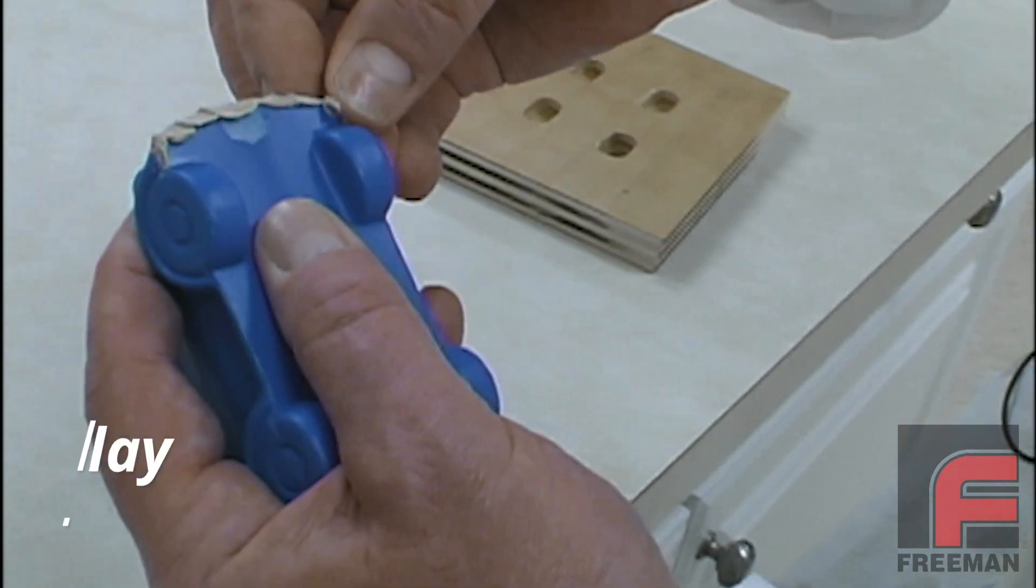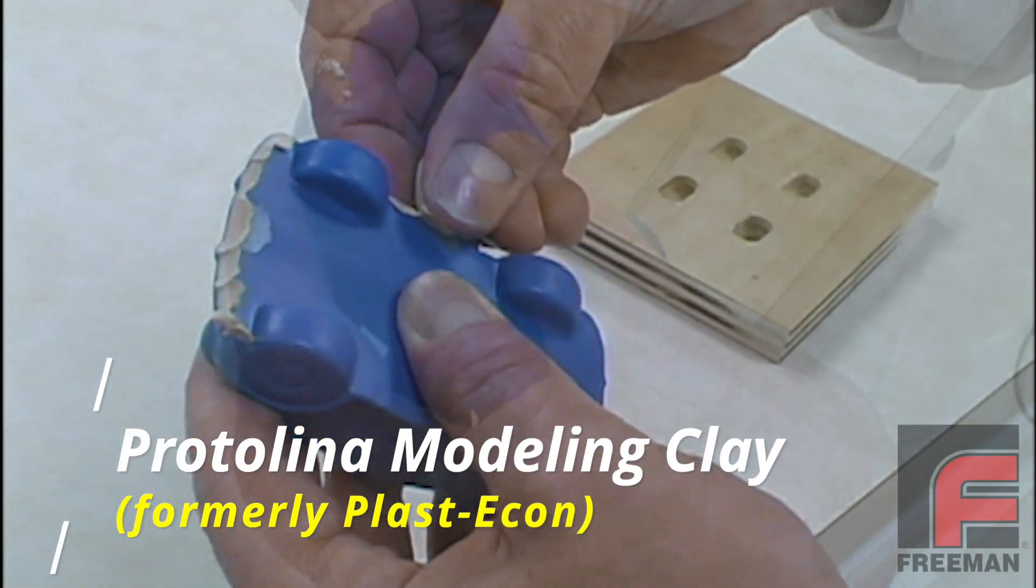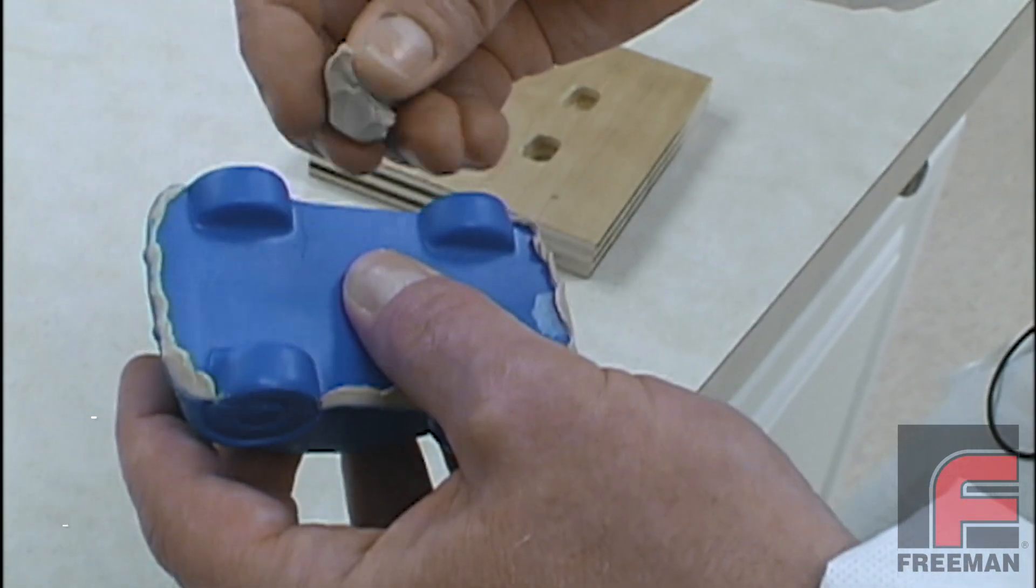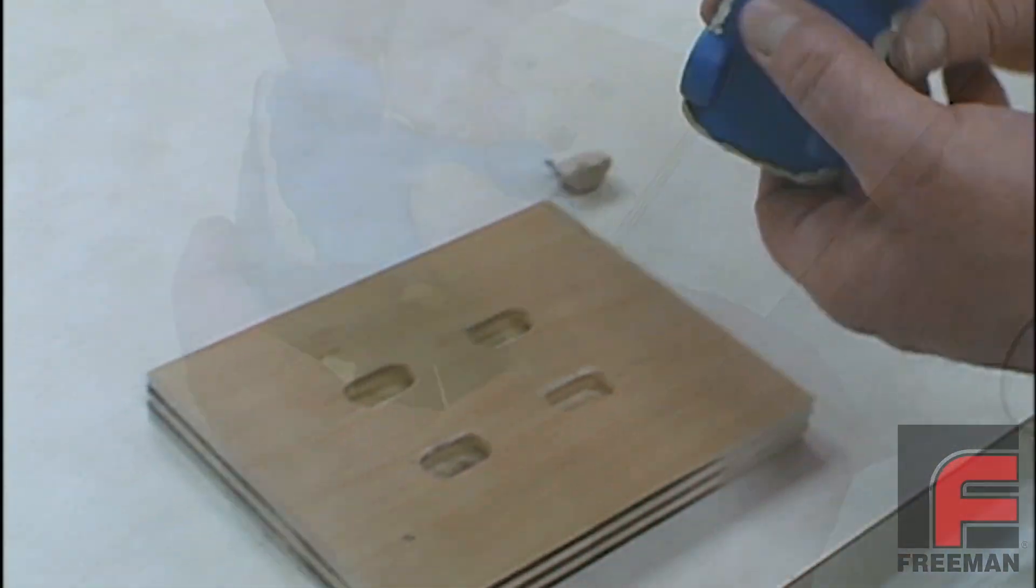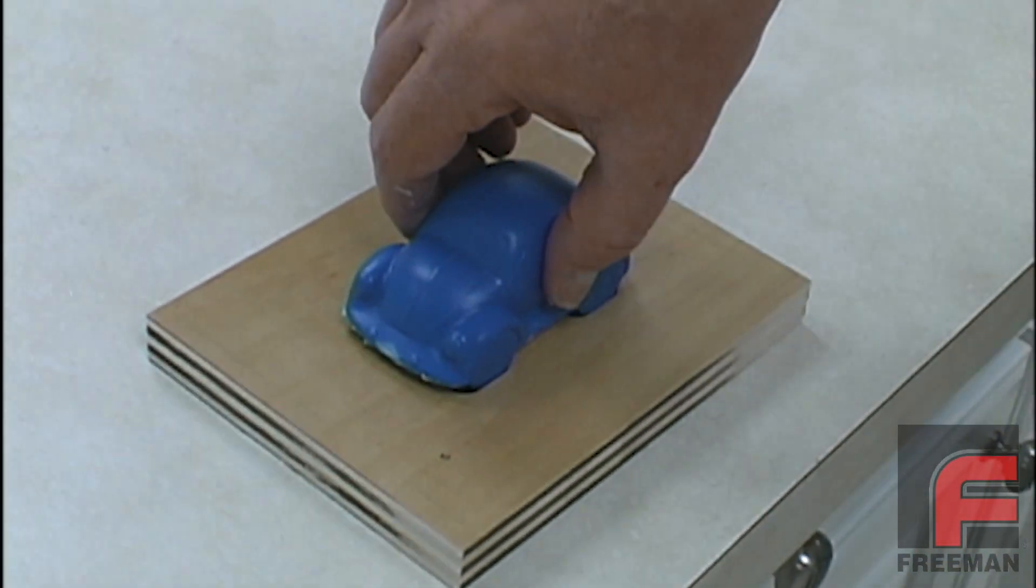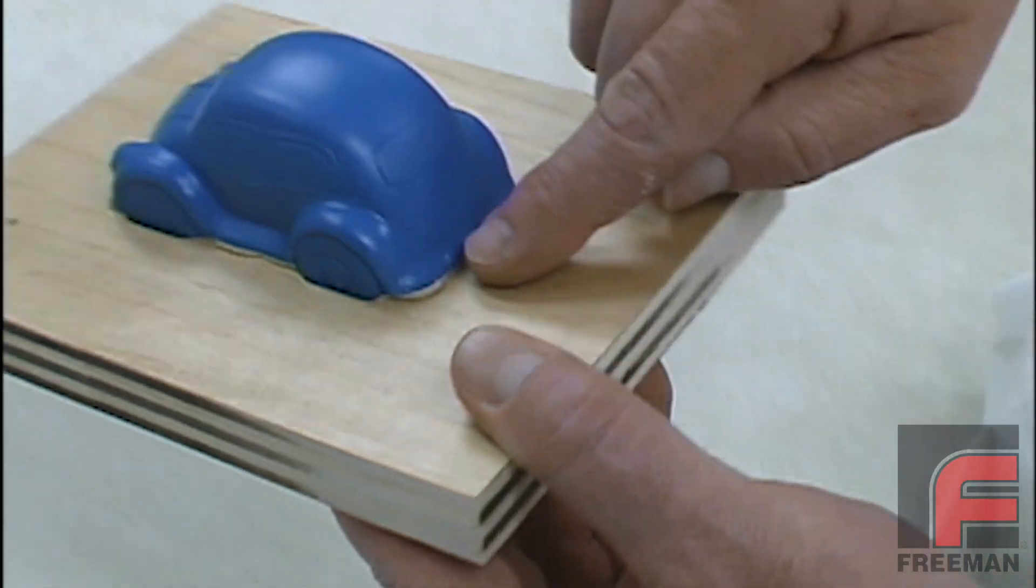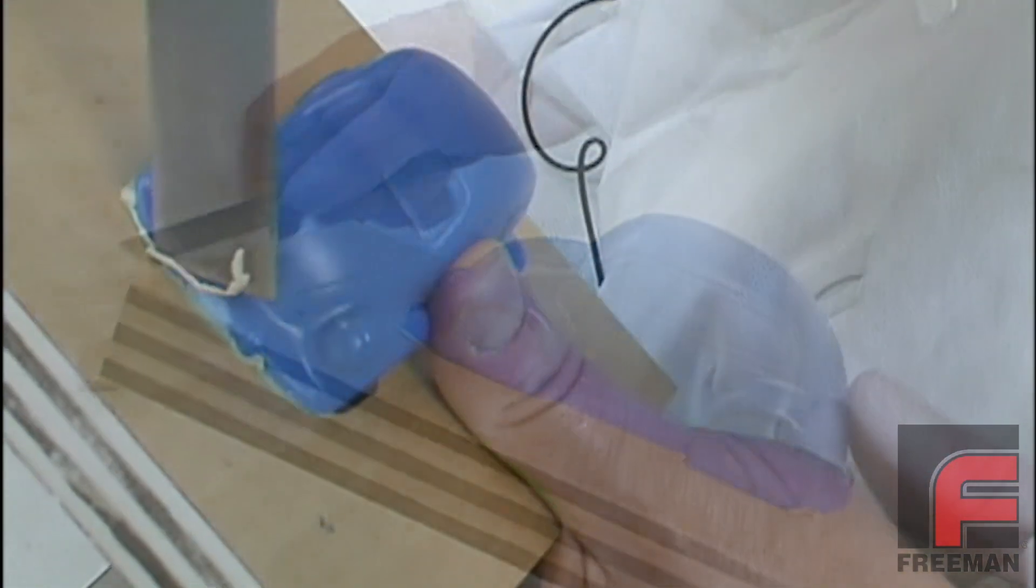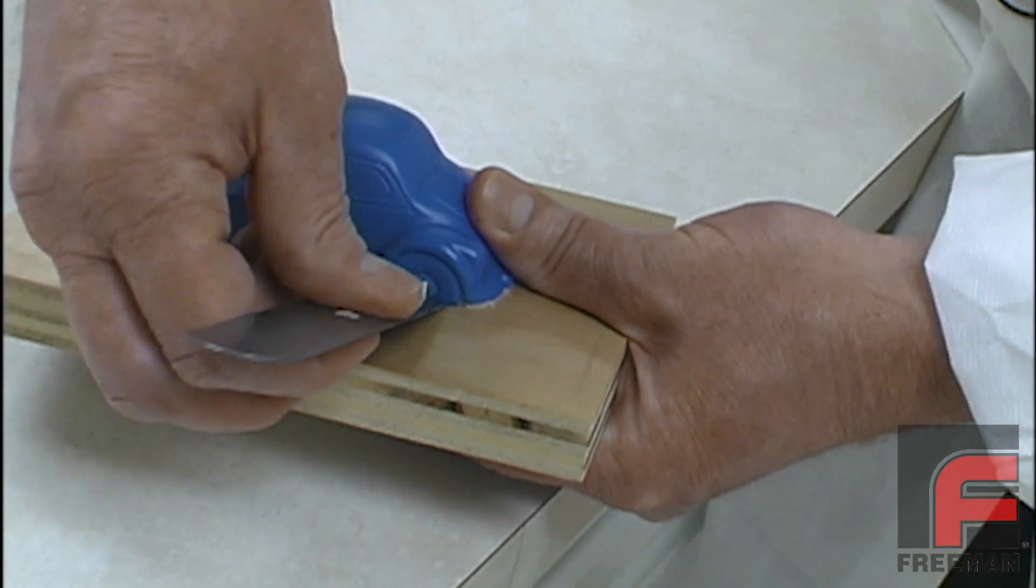We used Plasticon modeling clay to secure the model to the plywood and also to fill in the slight gaps along the parting line. This will prevent material from flowing underneath the car. Next we press the car onto the plywood. And as you can see, the excess clay has squeezed out all around the model. We trim the excess clay and then we press in some additional clay at the wheels and at any other area that did not get completely sealed.